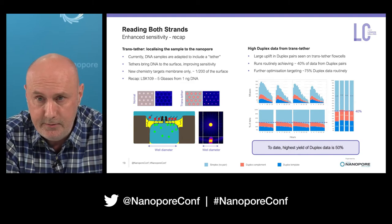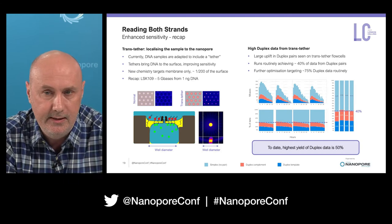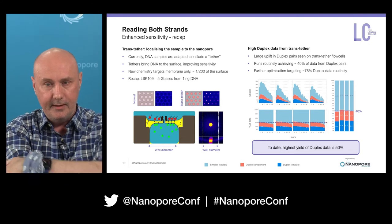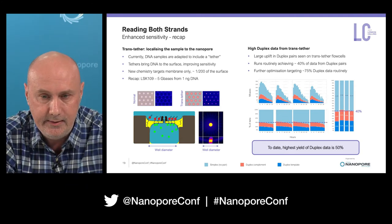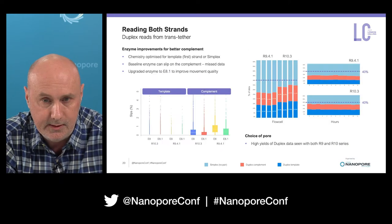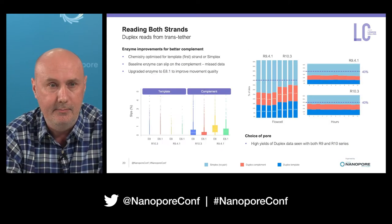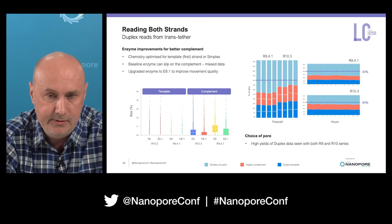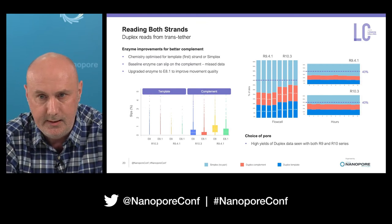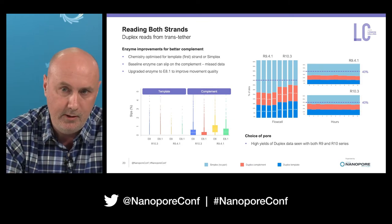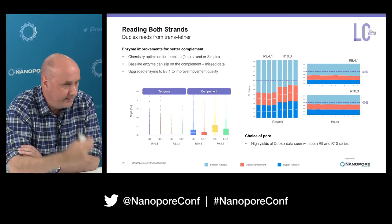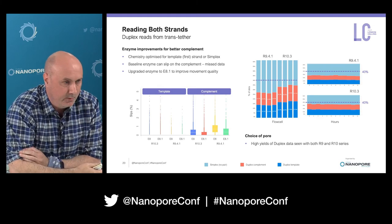We're now routinely getting about 40% duplex pairs. The highest we've seen in a run is about 50%, and we're targeting around 75% duplex follow-on with further optimization. You can see from the graphs that we see very consistent reading of both strands all the way through the run — very clockwork reading. We don't see any significant tail-offs or anything like that. It's a nice, natural clockwork architecture that exploits what's happening anyway. In my mind, this is a much nicer system than the ones we've attempted to roll out previously.